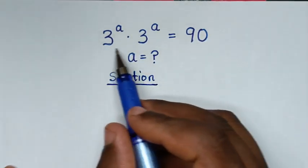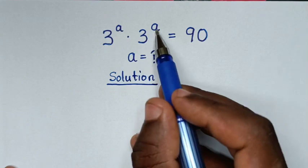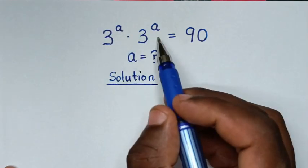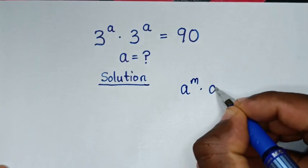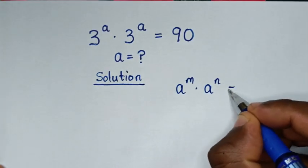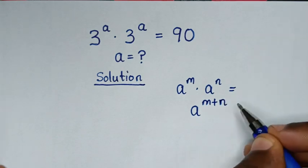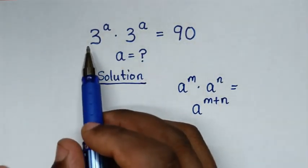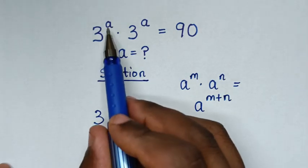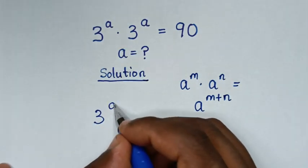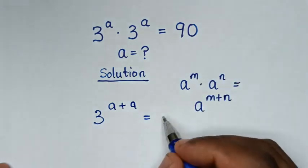From this problem, the left side 3^a times 3^a is in the form of the rule a^m times a^n which is equal to a^(m+n). So, here we have the same base of 3, and we add the powers, so it will be 3^(a+a), which is equal to 90.